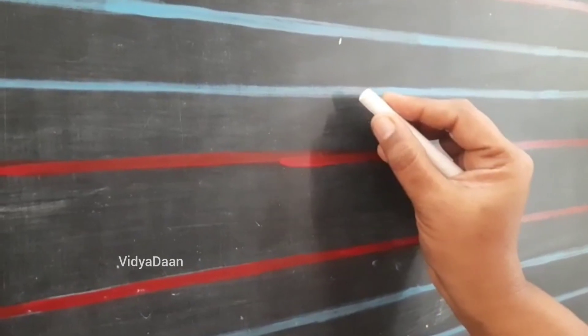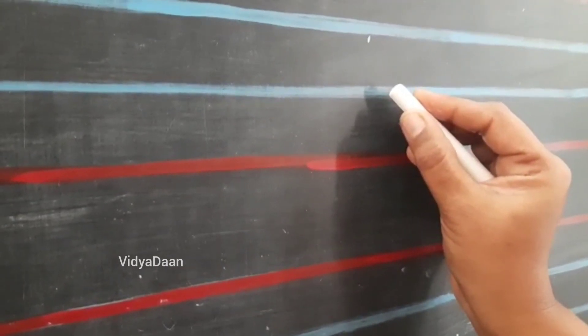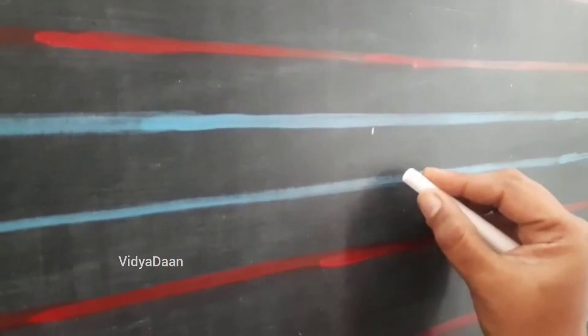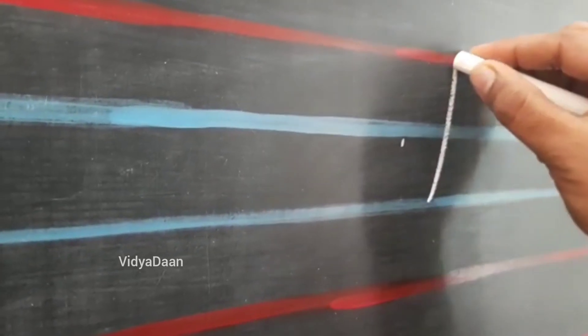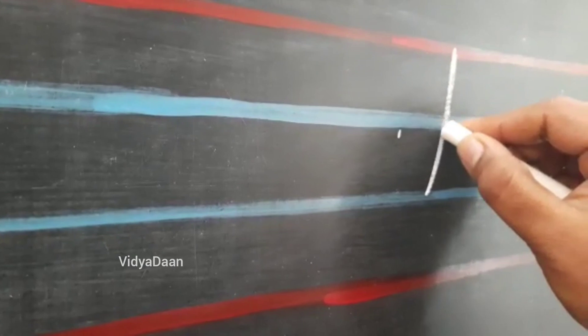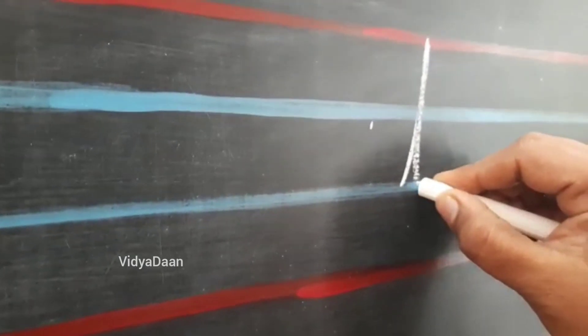Listen children, I am going to write letter L. See, I am starting from the baseline like this. Touch the upline and come back to the baseline and turn like this.